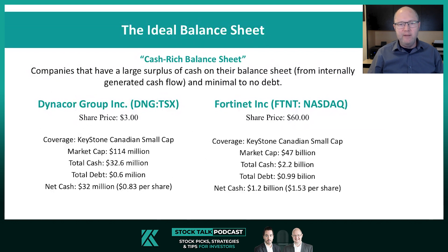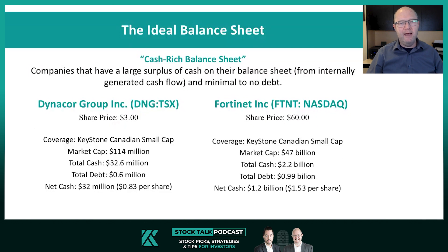This is an area of the market that we look at a lot. Just a couple of examples of companies we currently have under coverage: one being Dynacore, in our Canadian small cap research. They have a market cap of $114 million, almost $33 million in cash, almost no debt — about $0.83 per share in net cash compared to a share price of $3 right now. So this is a very cash-rich business. Another company in our Keystone US Growth research is Fortinet, which trades on the NASDAQ and is a cybersecurity company. They have a market cap of $47 billion, about $2.2 billion in cash, $1 billion in debt — so much more cash than debt, more than double. Net cash of $1.2 billion or $1.53 per share.